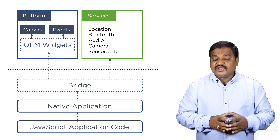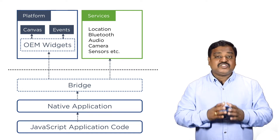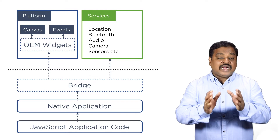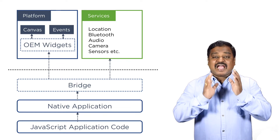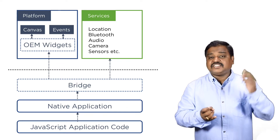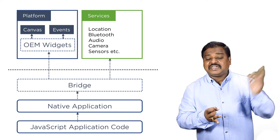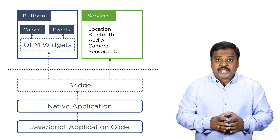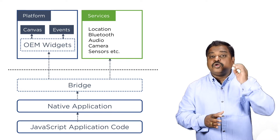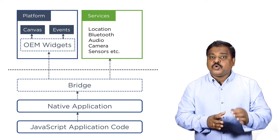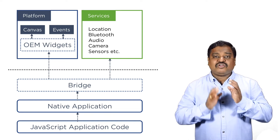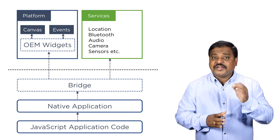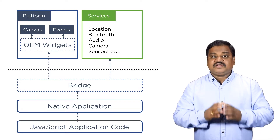Whenever we access UI elements frequently — for example, 100 times a second with actions like swipe, view animations, transitions, etc. — the app code has to communicate using the bridge, which usually creates a lot of performance issues.